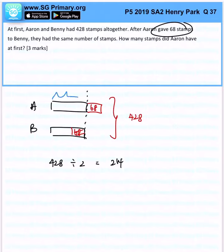Why? Because now we know that this is 214. And for us to find the amount of stamps Aaron had at first, very simple. We just gotta take 214 plus 68, and that will give us 282.